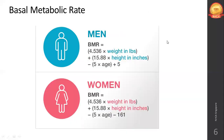Next is the basal metabolic rate formula. There is a formula to calculate BMR — the textbook gives weight in pounds, but you can use the kilogram variant or convert kilograms to pounds and apply the same formula. You can take a screenshot of this slide for reference.